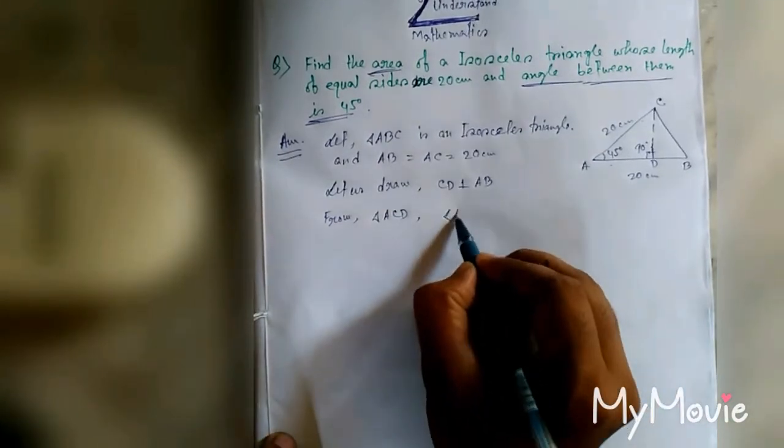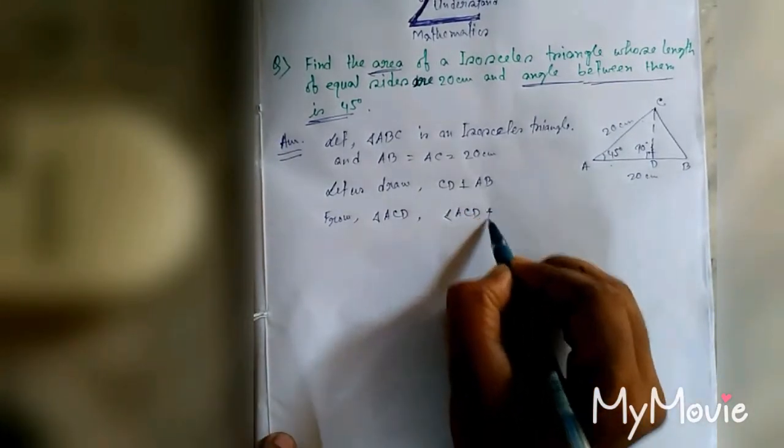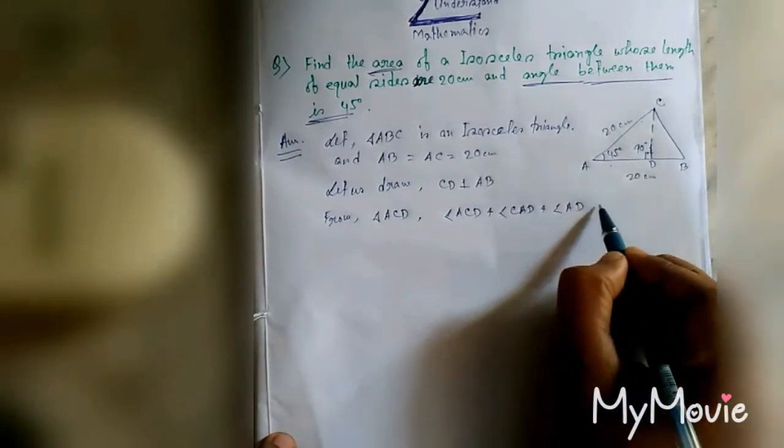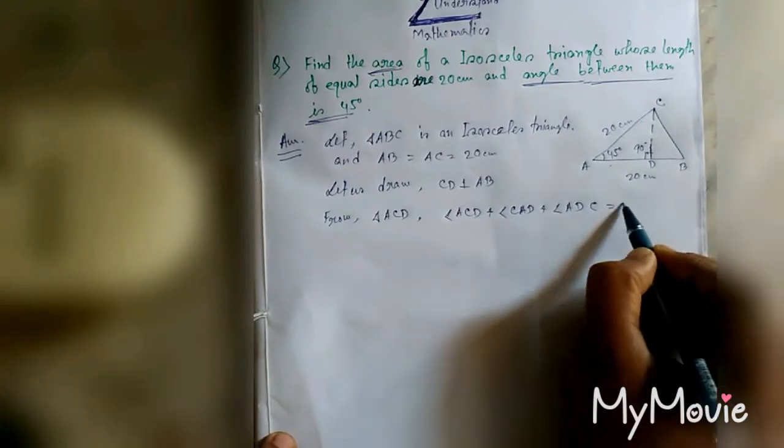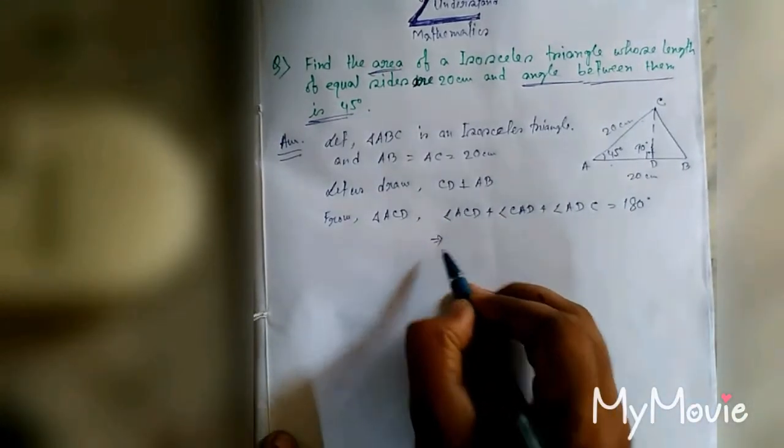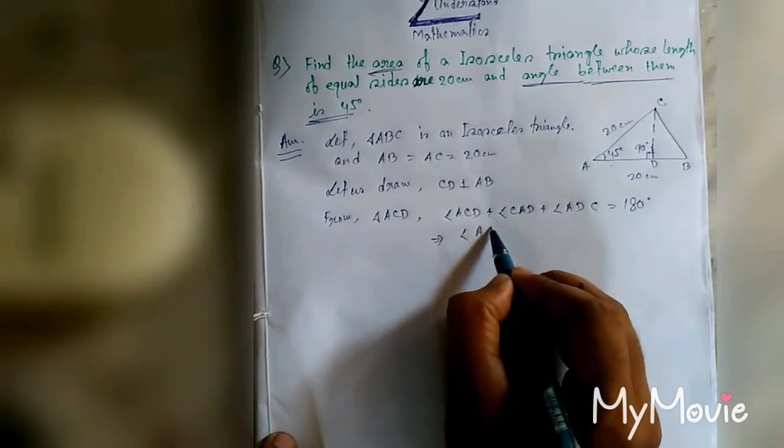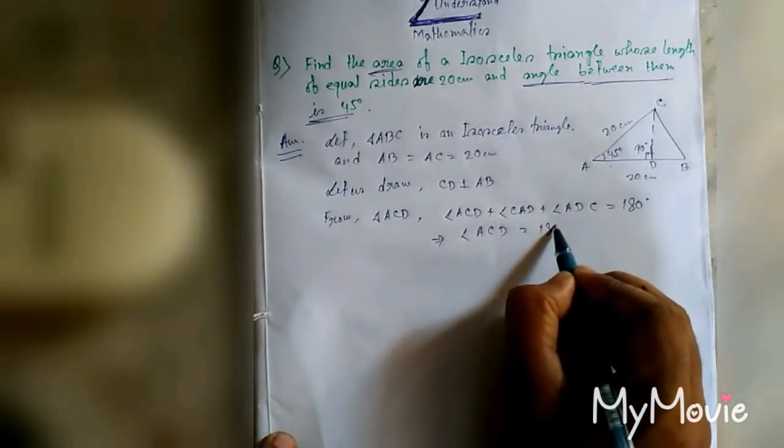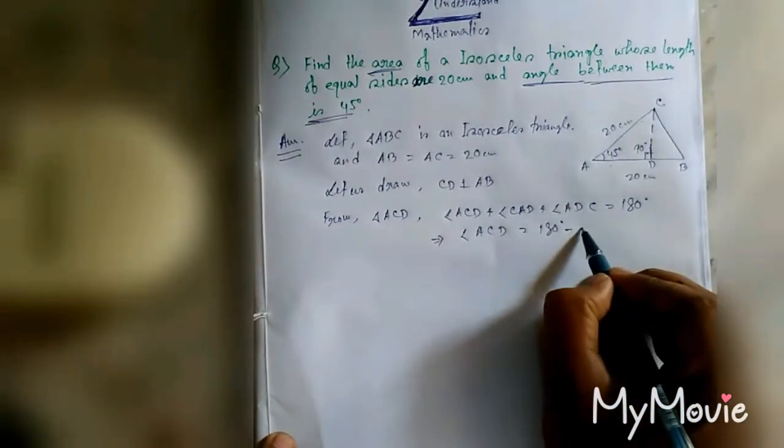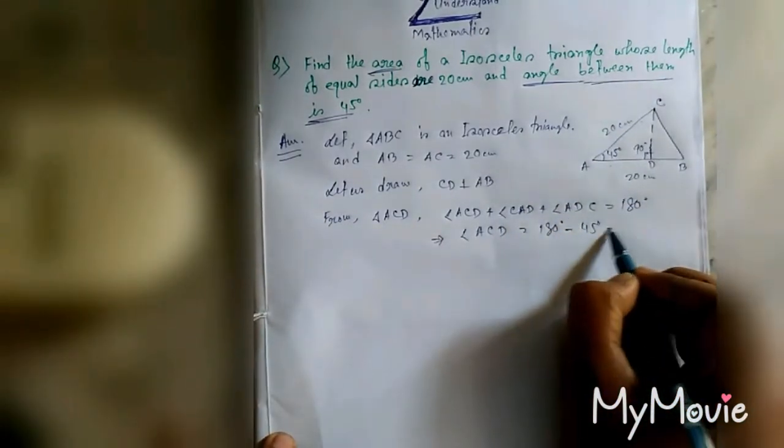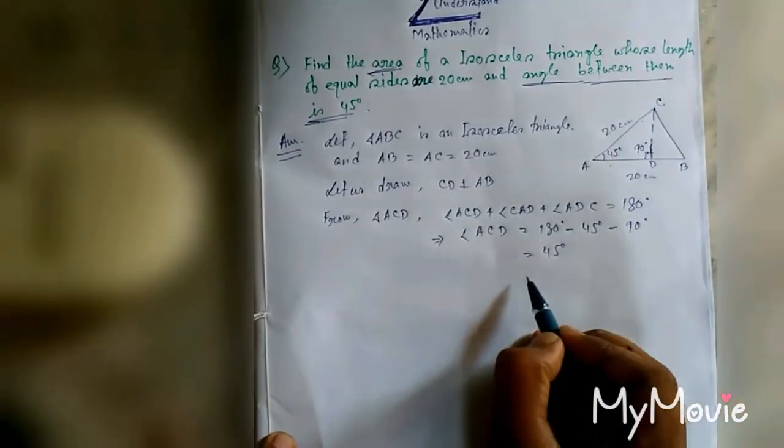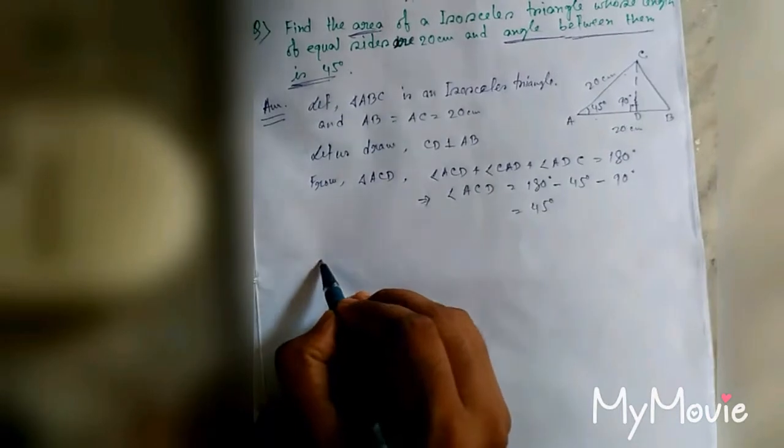Angle ACD plus angle ADC plus angle CAD equal to 180. Now angle CAD equal to 180 minus angle BAC, which is 45, minus angle ADC, which is 90 degrees. So this is equal to 45 degrees.